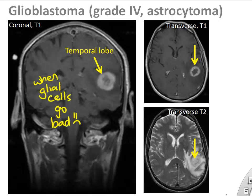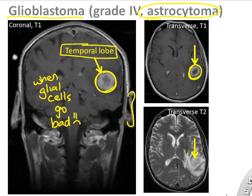An astrocytoma or glioblastoma is a cancer that can be seen growing in the brain, arising from those astrocytes.